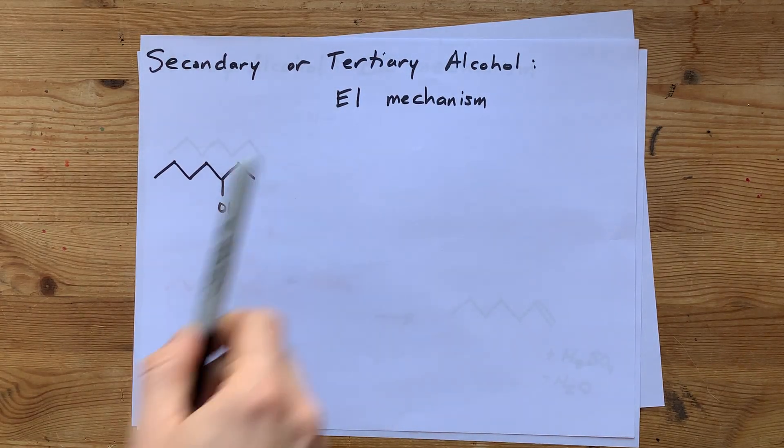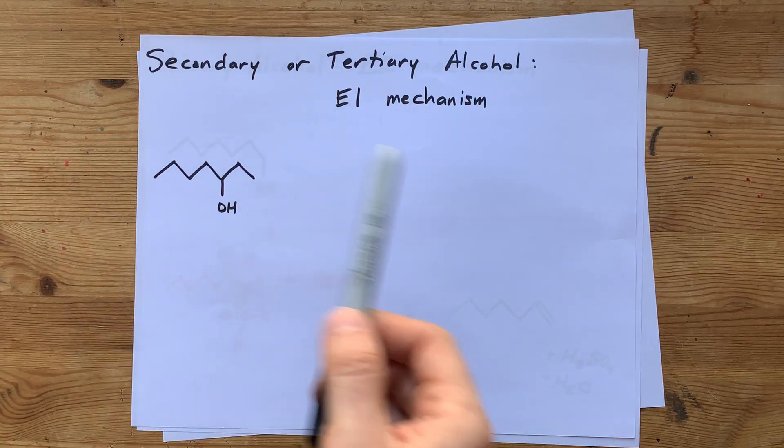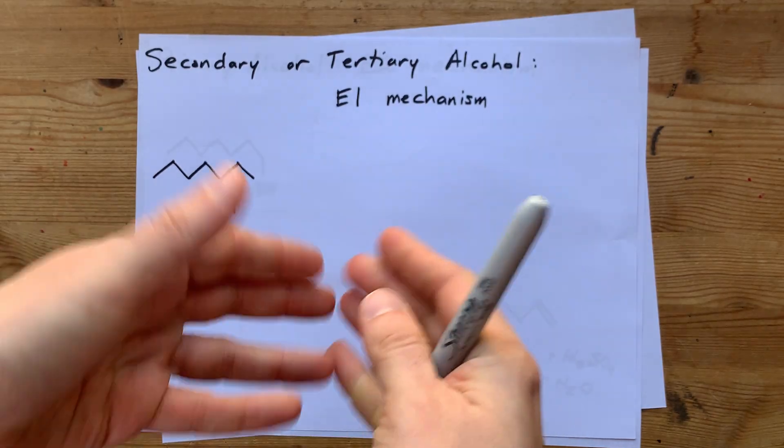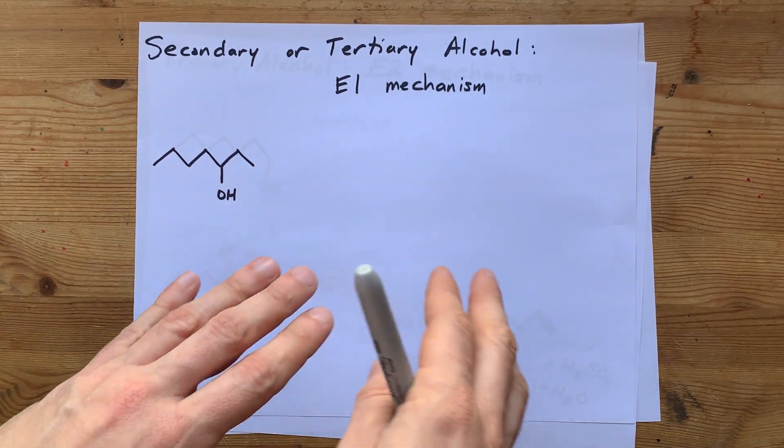So for E1, the one here represents unimolecular. It is a single thing that is doing its magic in the rate-limiting step.